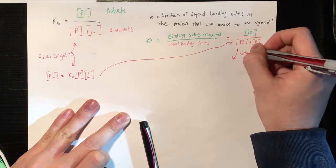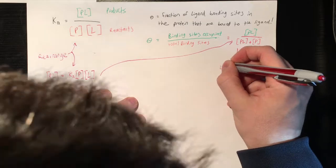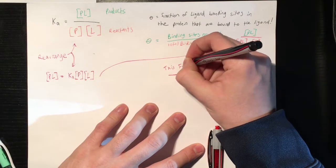And you can substitute this into the theta equation and simplify that further to get that theta equals the concentration of your ligand over the concentration of your ligand plus one over Ka.